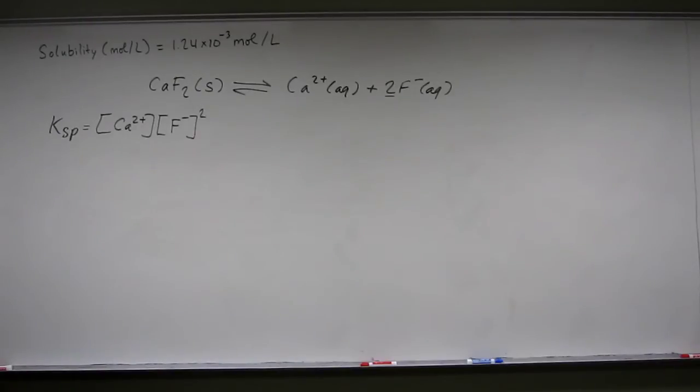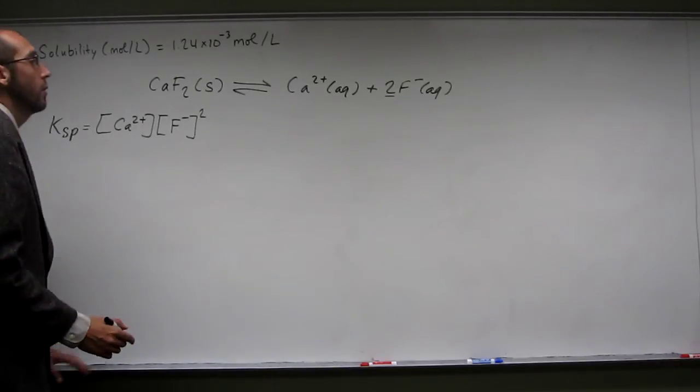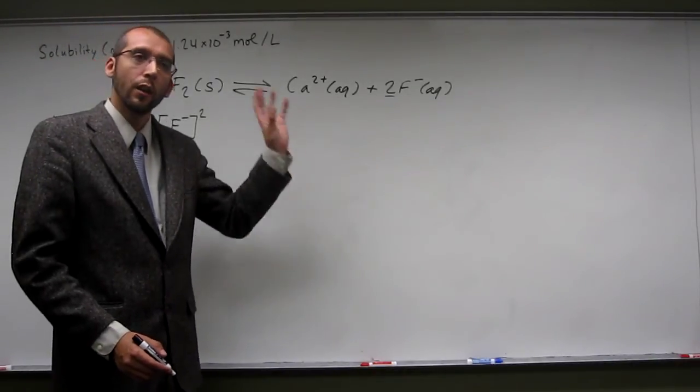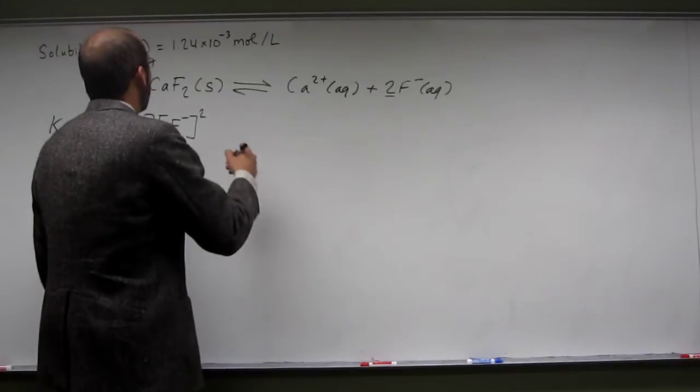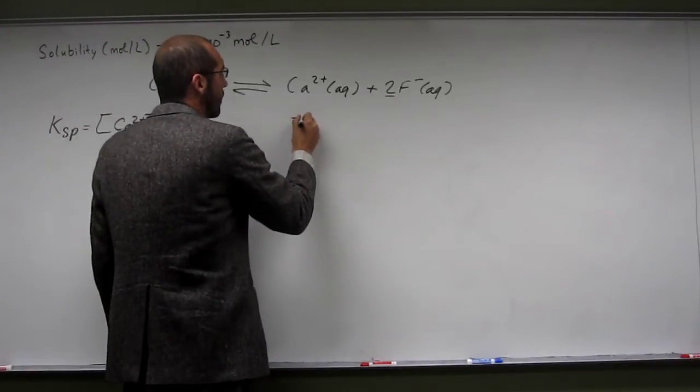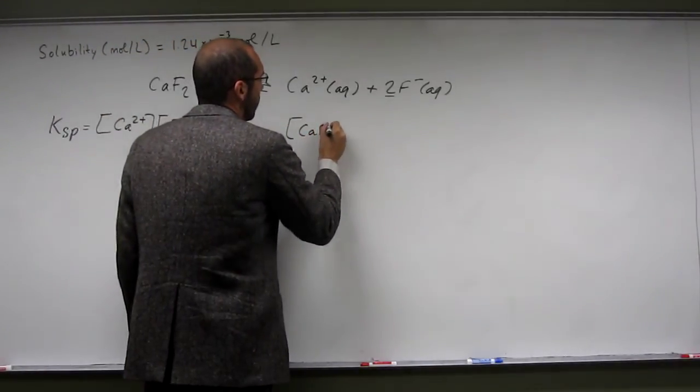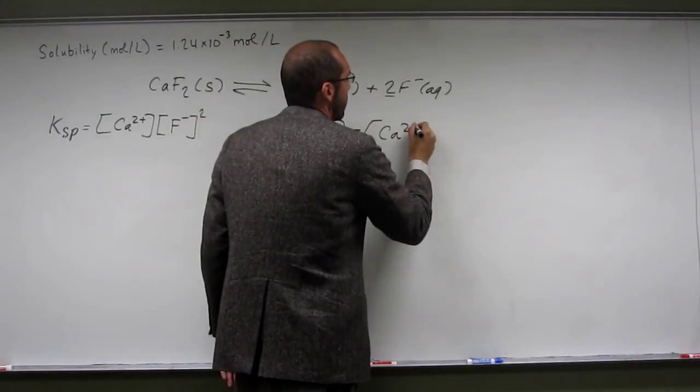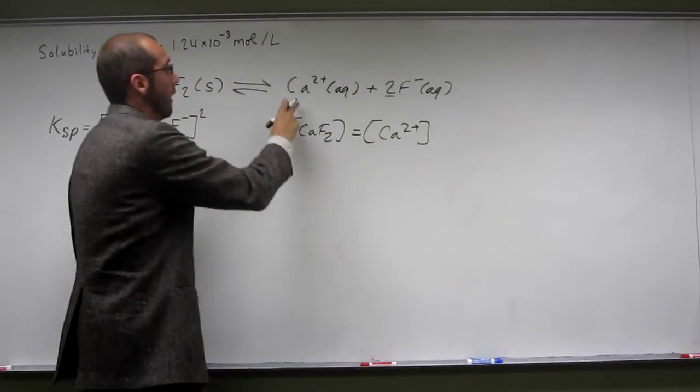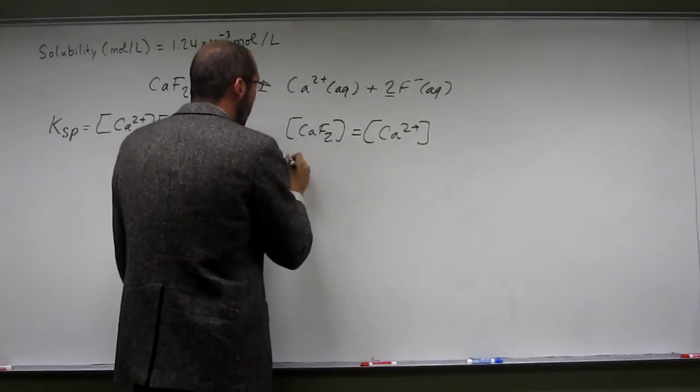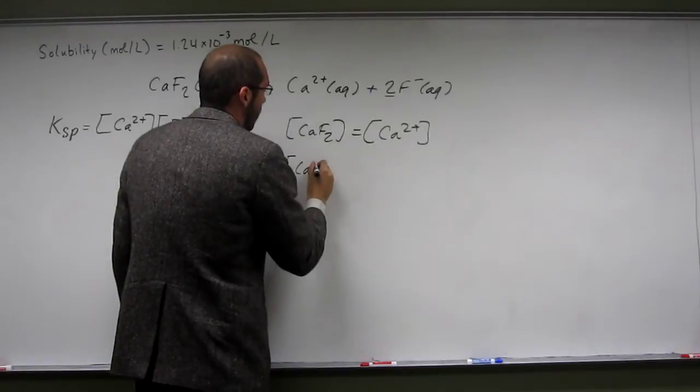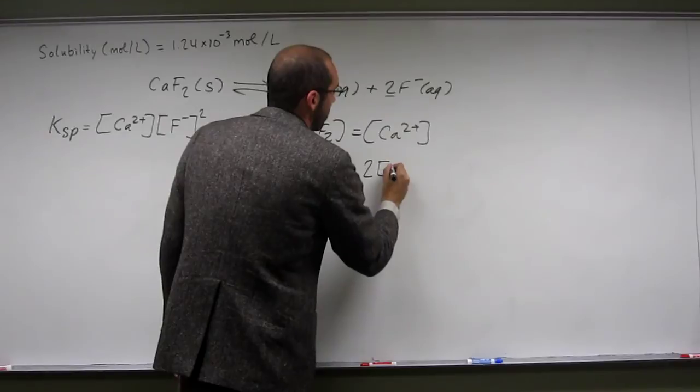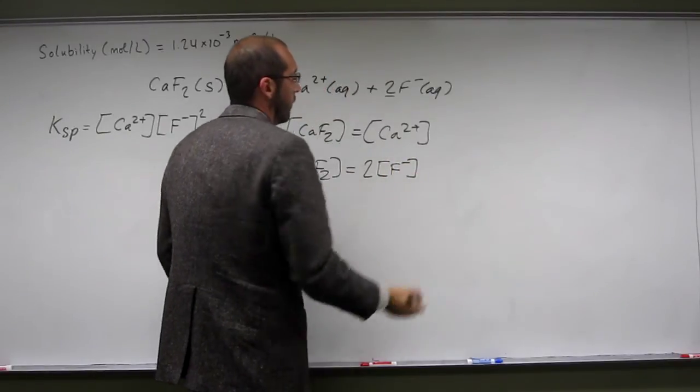You could go through the entire calculation, but I'm assuming you can do this in your head by now. The concentration of the calcium fluoride is going to be equivalent to the concentration of Ca2+ because we have a one-to-one ratio. And the concentration of the calcium fluoride is going to be equivalent to two times the fluoride ion.